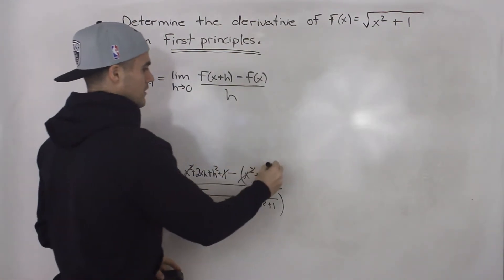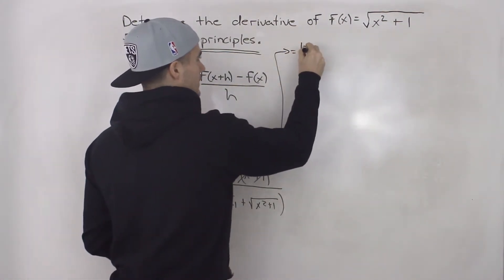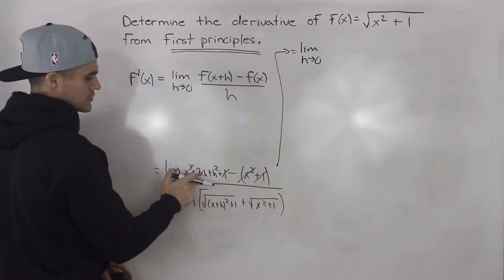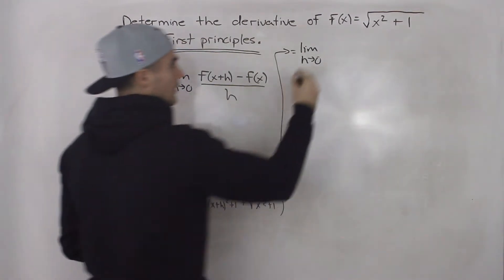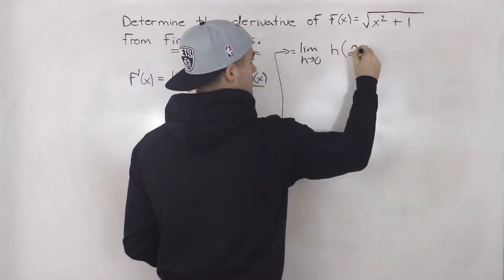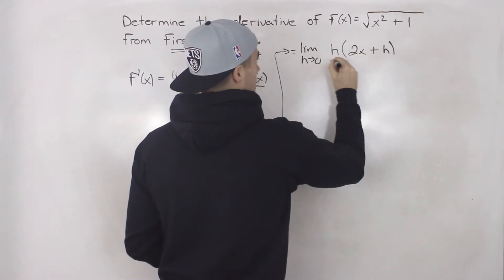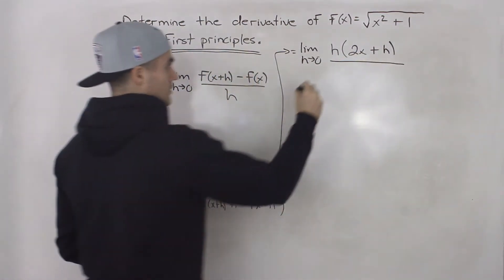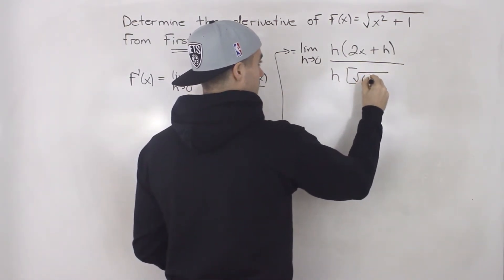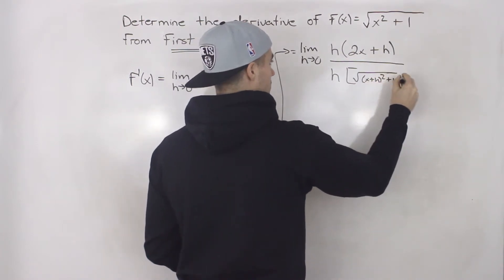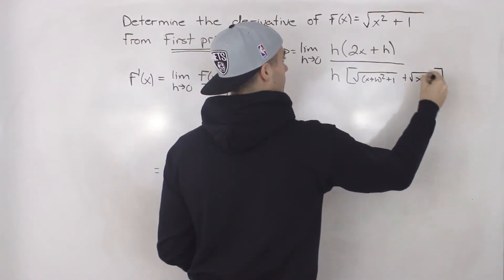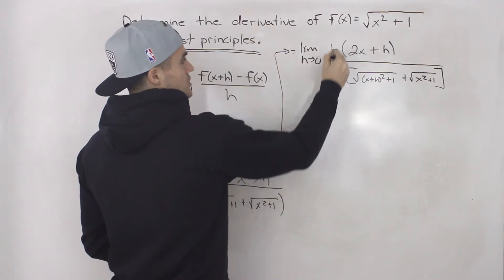Continuing from here, we have the limit as h goes to zero. In the numerator we're left with 2xh plus h squared, and we can factor out an h from those two terms to get h times the quantity 2x plus h. That's all over the same denominator: h times the square root of x plus h squared plus one, plus the square root of x squared plus one.